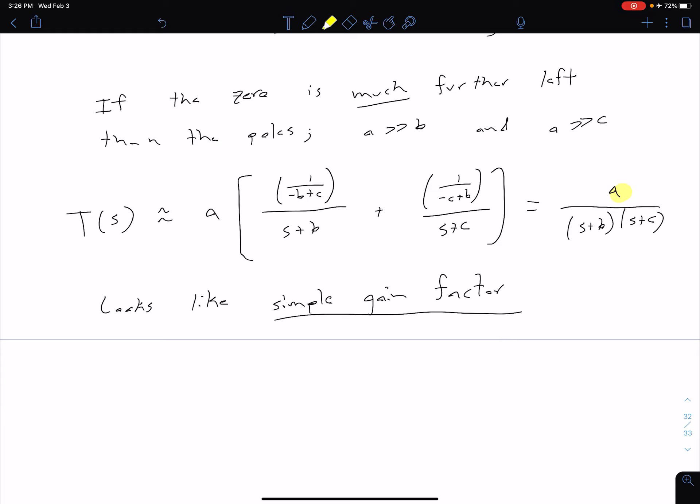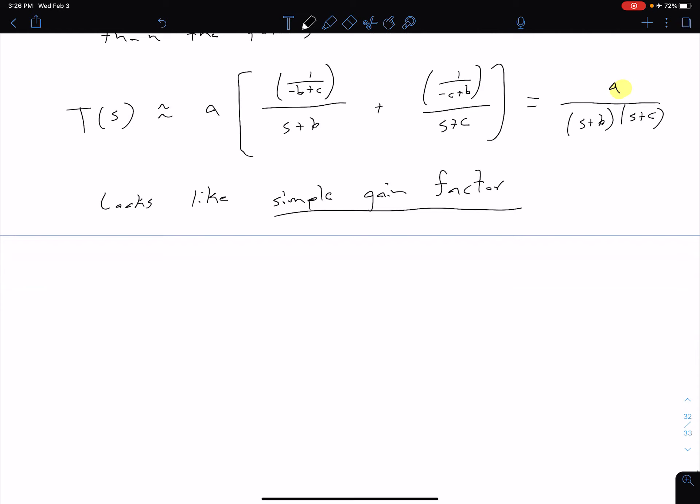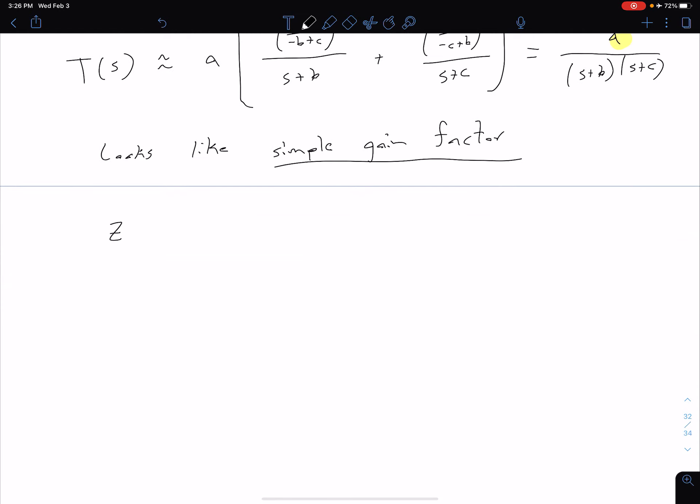And so as it turns out, the further left that A is, the further left that zero is, the better that approximation is going to be true. But as that zero gets closer to our dominant poles, the more effect it's going to have on our transient response. So zero closer to our dominant poles, we're going to have more effect on our transient response.